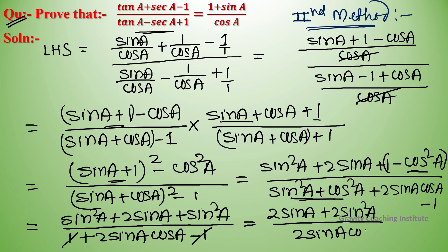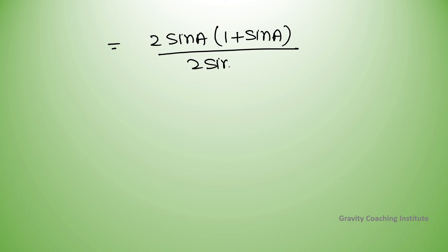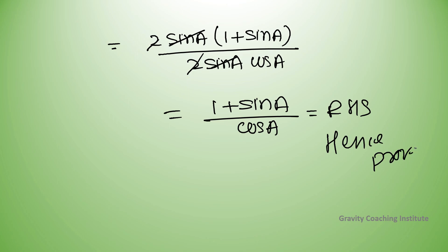Taking 2 sin A common from the numerator gives 2 sin A into (1 plus sin A) upon 2 sin A cos A. The 2 and sin A cancel, leaving 1 plus sin A upon cos A, which equals RHS. Hence proved.